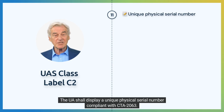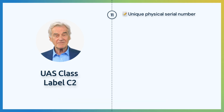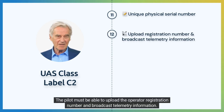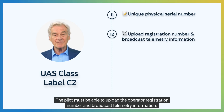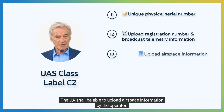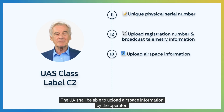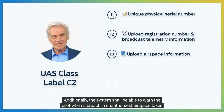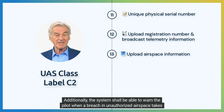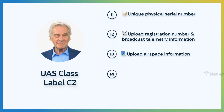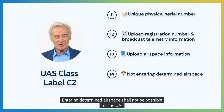The UA shall display a unique physical serial number compliant with CTA 2063. The pilot must be able to upload the operator registration number and broadcast telemetry information. The UA shall be able to upload airspace information by the operator. Additionally, the system shall be able to warn the pilot when a breach in unauthorized airspace takes place.